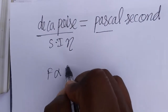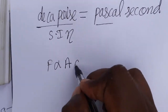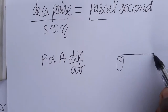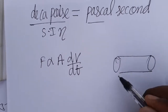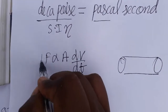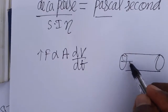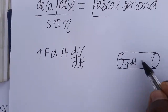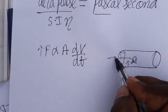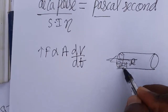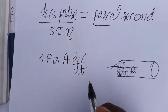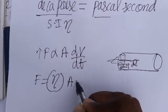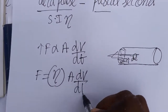Force is directly proportional to the area of the liquid flowing and the velocity gradient. When the area of the pipe is increased, the force increases. And from the surface, when the length is increased, the velocity of the liquid slowly increases — that is what we call the velocity gradient.